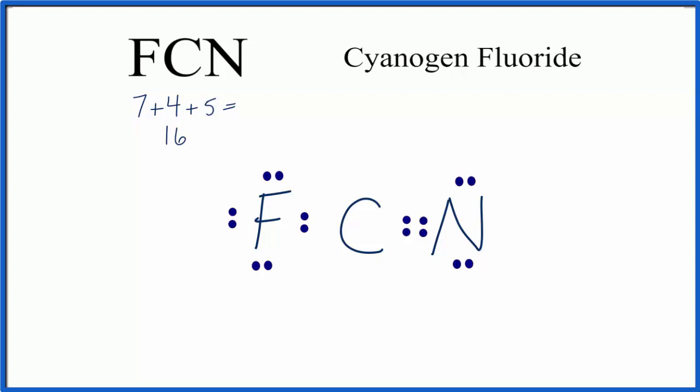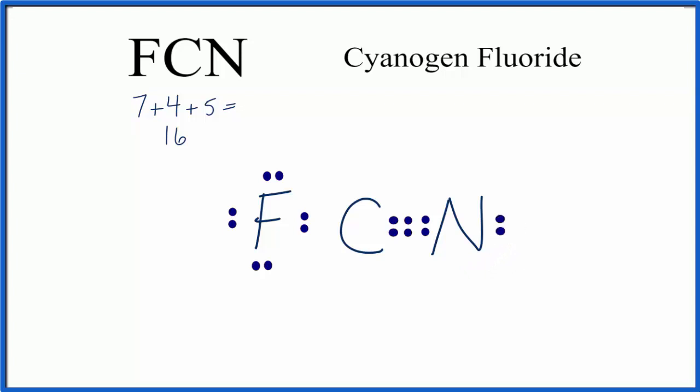Let's take two more from nitrogen and form a triple bond. I'll also move these two over here to make it look nicer. Now each atom has an octet, and we're using all 16 valence electrons for this compound.